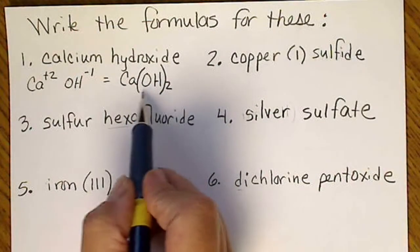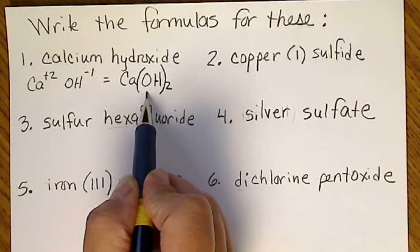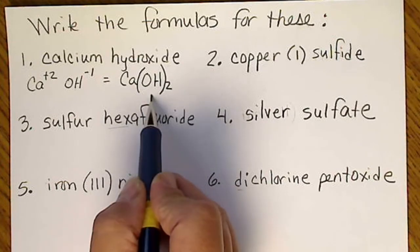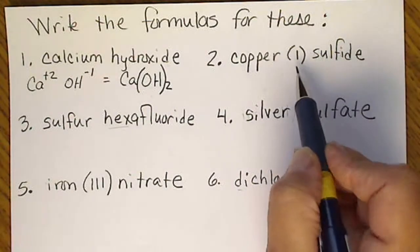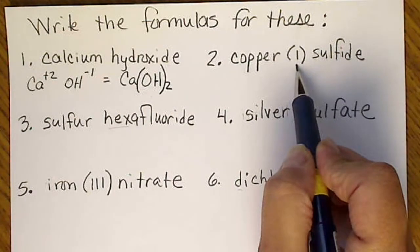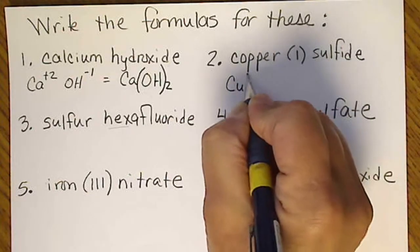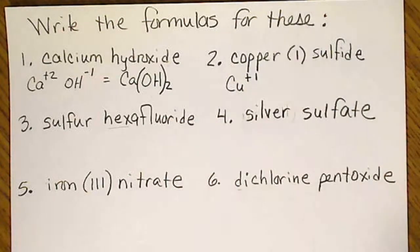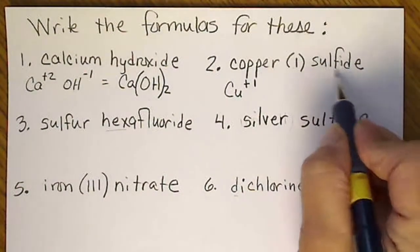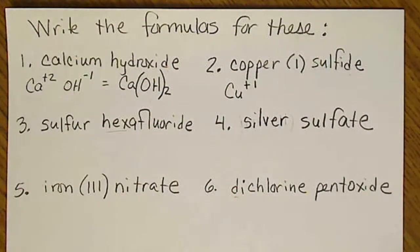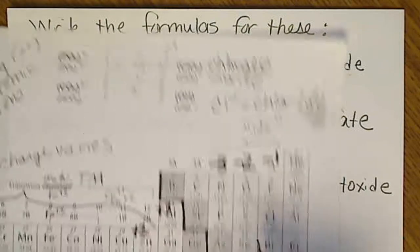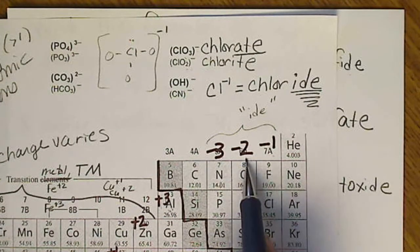If we see a Roman numeral in a name, we know the charge of the metal. Copper(I) is going to be copper +1. This is sulfide, so that means it's a symbol on the periodic table. We find sulfur and we put a -2 charge above sulfur.